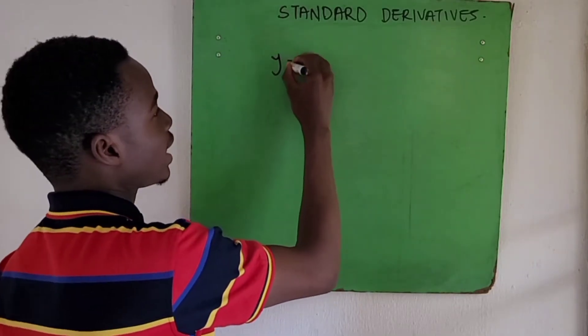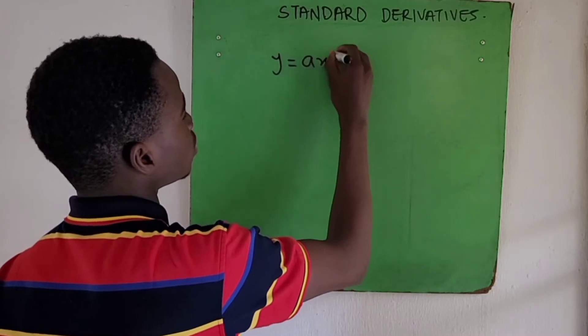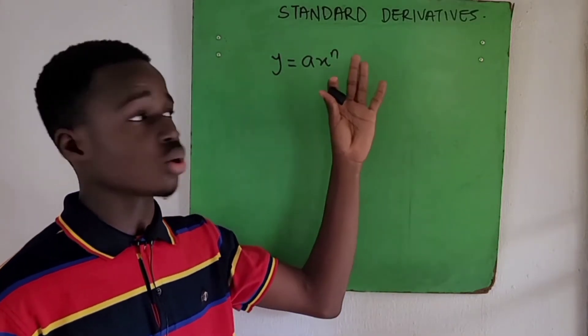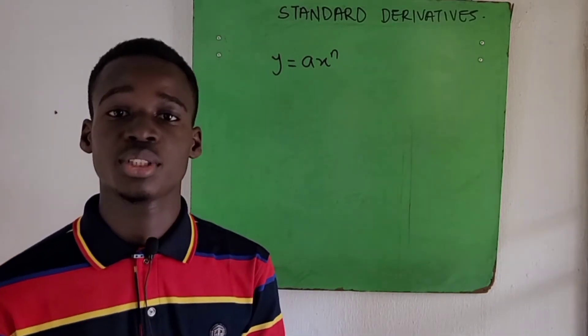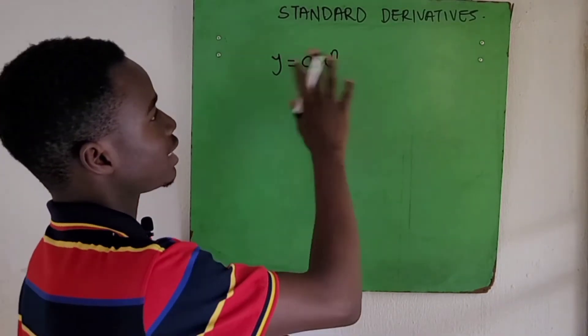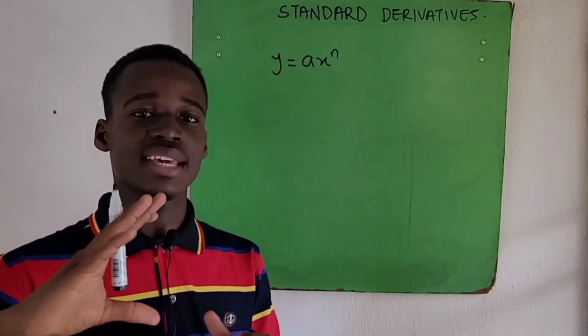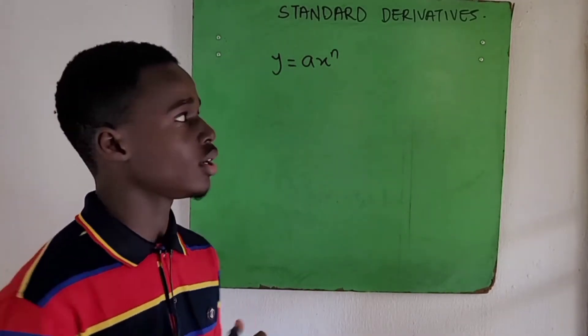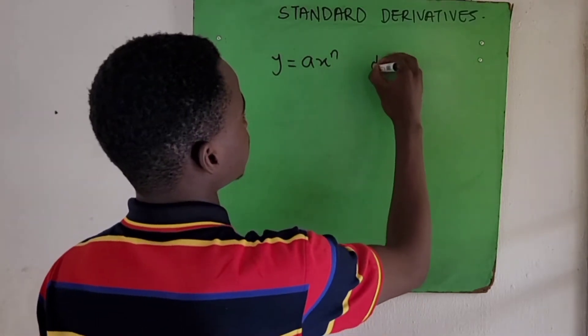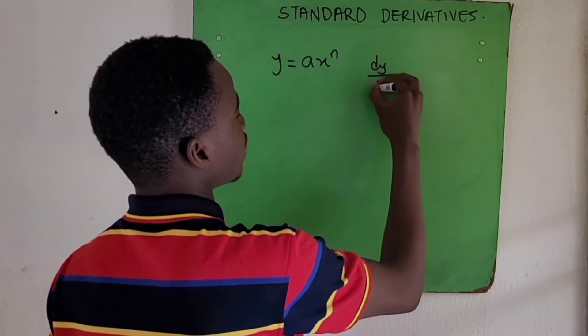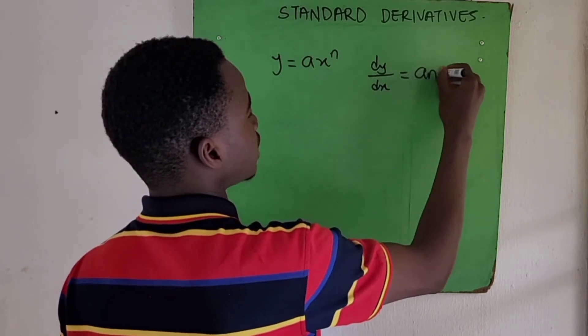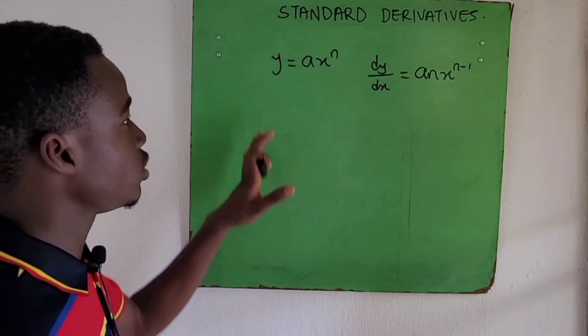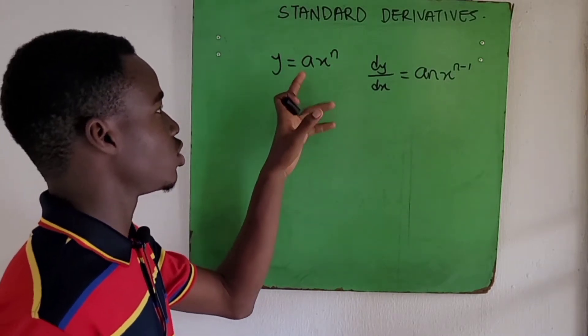Suppose we have a function y = ax^n. Usually for us to solve this we need to go through the process of the first principle of differentiation, but with standard derivatives we are given a formula, a template, like a shortcut. That template says dy/dx = anx^(n-1).